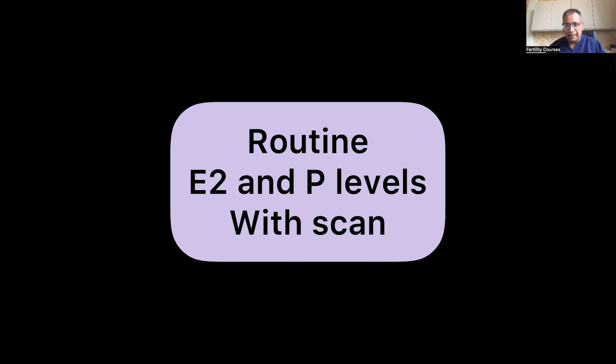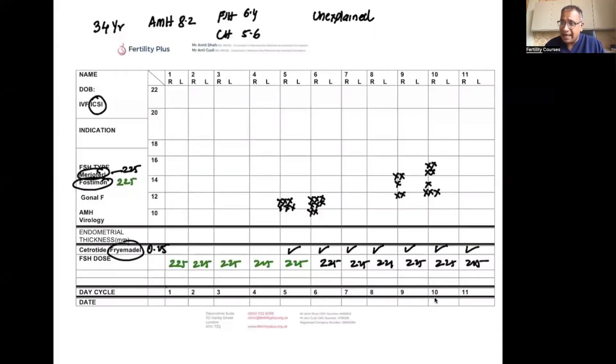So we're going to talk about this case. One of the challenges that we see in stimulation is when you do estrogen levels, you're expecting a rise of estrogen levels to take place. When that rise does not happen, you are suspecting whether the follicles have stopped growing or when there's been ovulation. Let me go through one of the cases which I dealt with, which will help us to understand this a bit further.